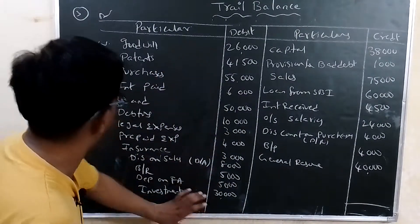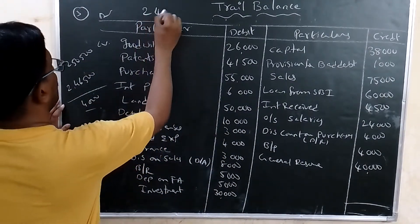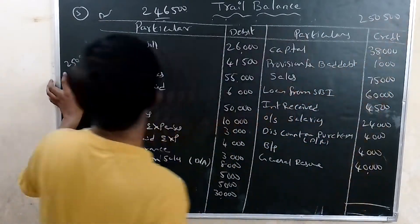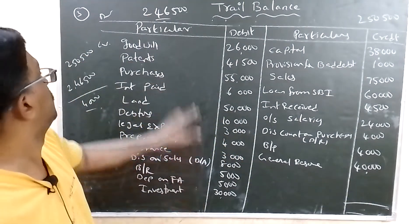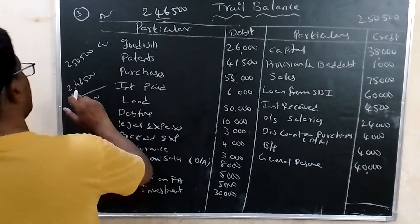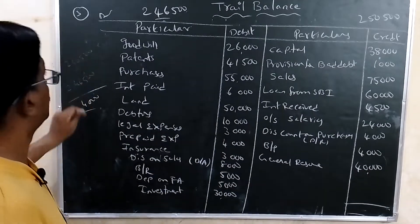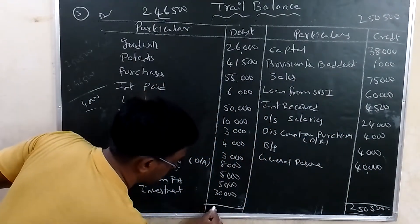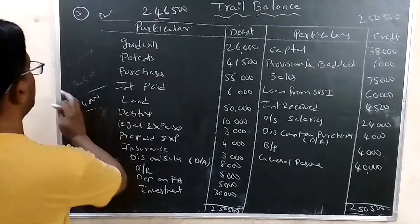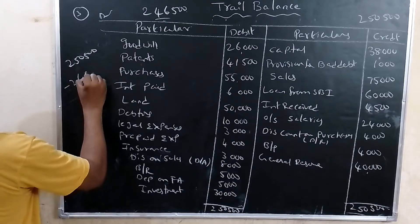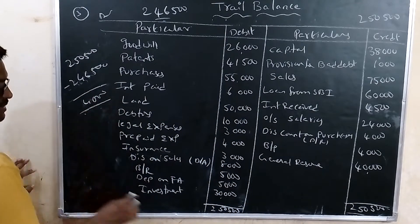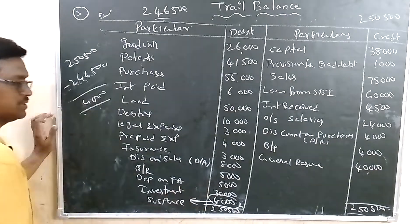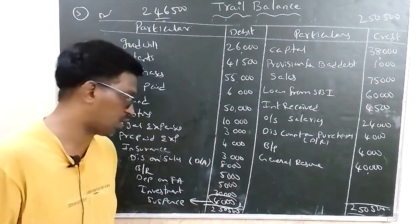The debit total is 2,46,500 and the credit total is 2,50,500. The difference is 4,000. Since the credit side is higher, we write suspense account 4,000 on the debit side to balance the trial balance.